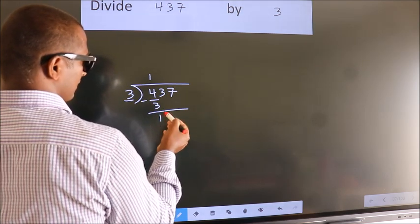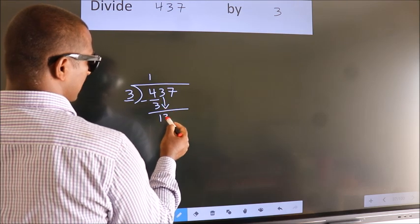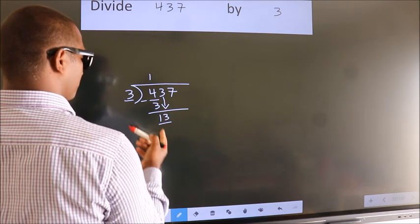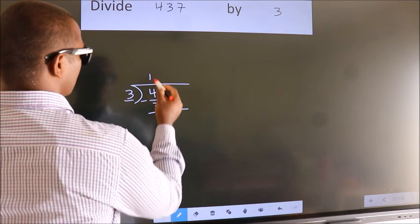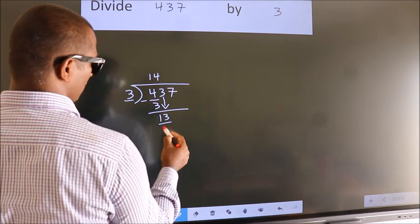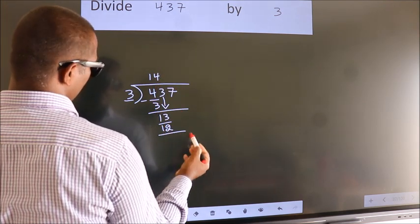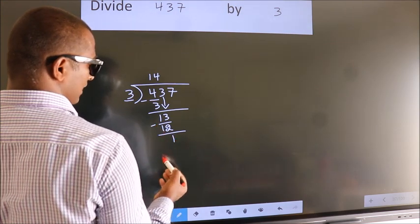After this, bring down the beside number. So 3 down. So 13. A number close to 13 in 3 table is 3 4s 12. Now we subtract. We get 1.